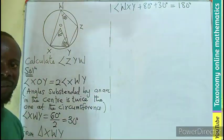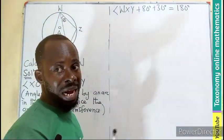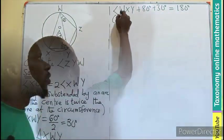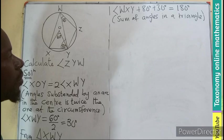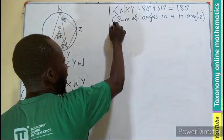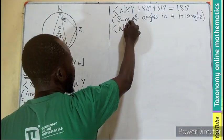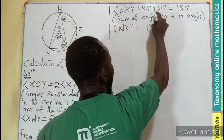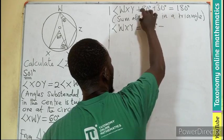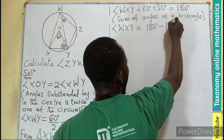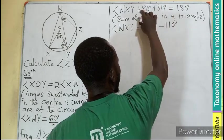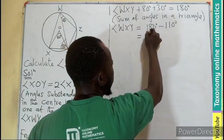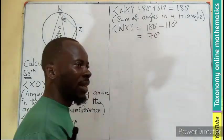I believe you can remember that property. And that is going to be the sum of the angles in the triangle. So the sum of angles in the triangle give us 180. So let's maintain the angle WXY equals to 180 minus the sum of this will be 110, and that gives rise to a 70 degree.